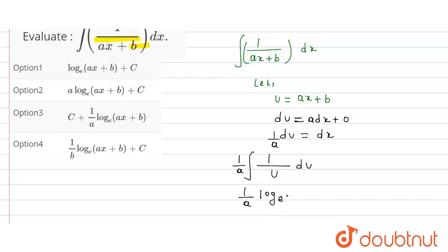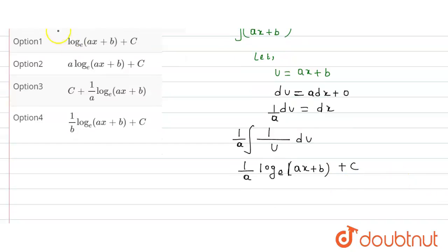That is equal to how much? This is ax plus b plus the constant c. So this will be our answer: option c, 1 by a log e of ax plus b plus constant c.